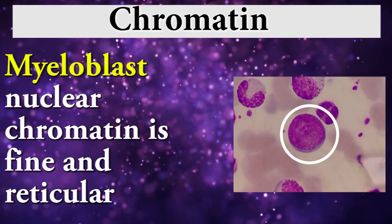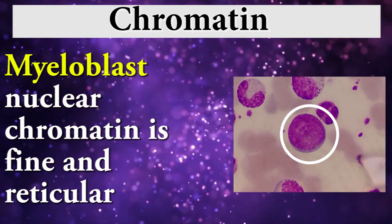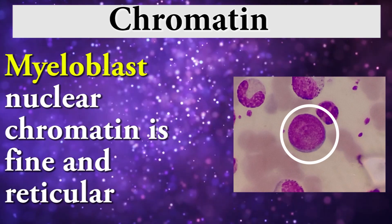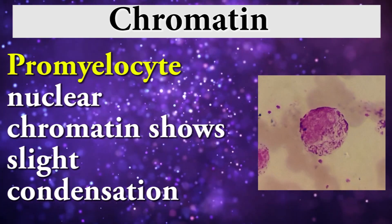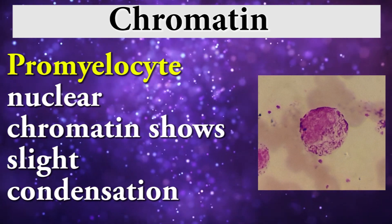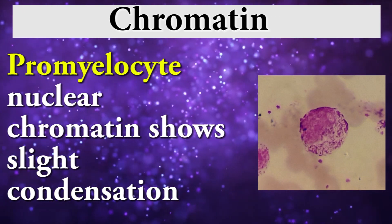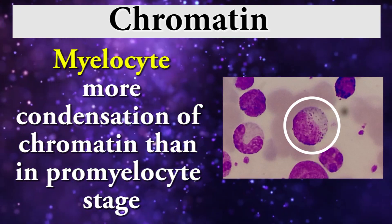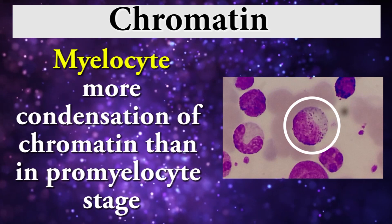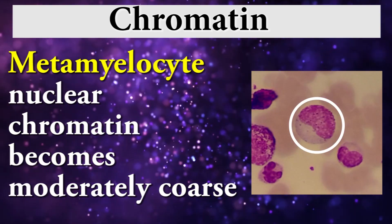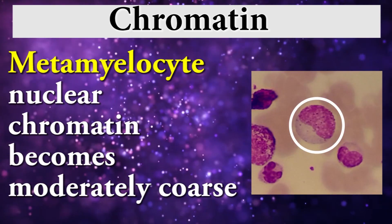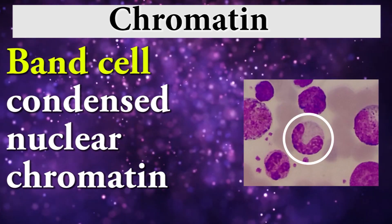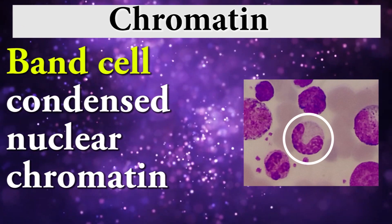Fourth one is chromatin. Myeloblast: nuclear chromatin is fine and reticular. Promyelocyte: nuclear chromatin shows slight condensation. Myelocyte: more condensation of chromatin than in promyelocyte stage. Metamyelocyte: nuclear chromatin becomes moderately coarse. Band cell: condensed nuclear chromatin.